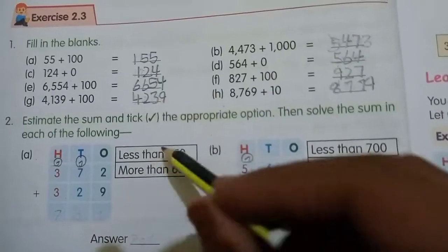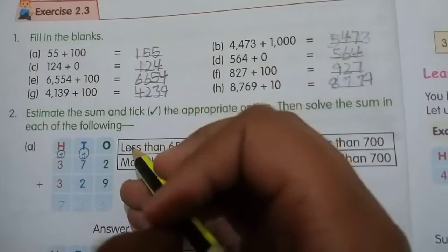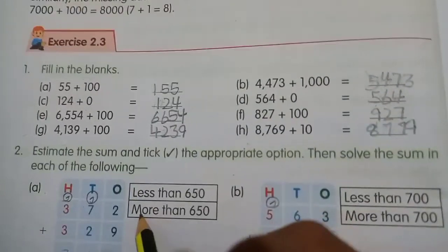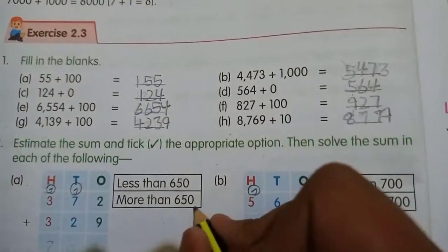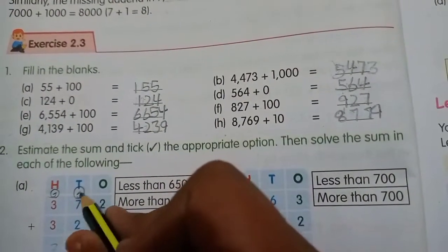Second question: estimate the sum and tick the appropriate option, then solve the sum in each of the following. The one which is more than 650, so 2 and 9...10 right. Now the sum of...